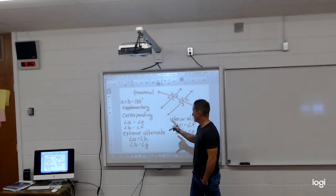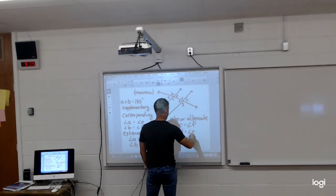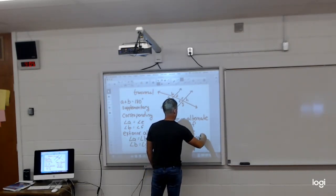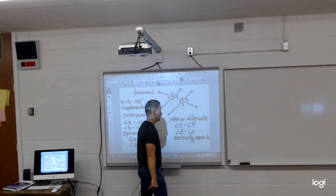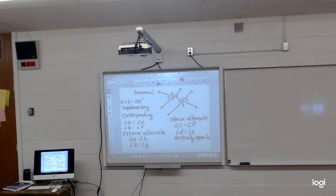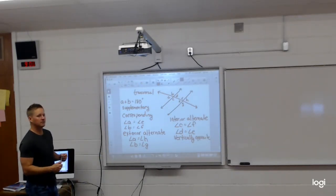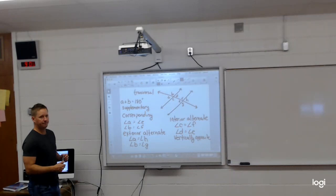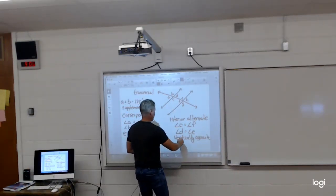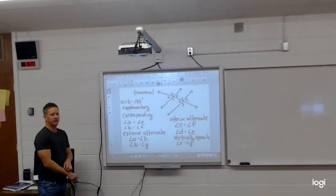So I've got exterior alternate, corresponding. So then the last one on this is vertically opposite angles. You might want to give me a set of vertically opposite angles. F and G. Yeah.